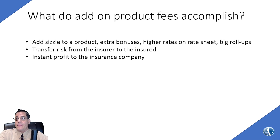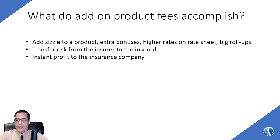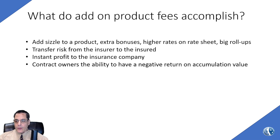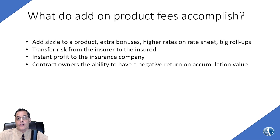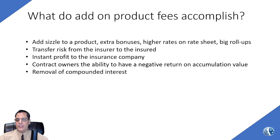I haven't seen where they're taking these fees and making sure that the guarantees are stronger on these products — like down the road, if life expectancy increases, they'll be able to support the long-term guarantees these fees are supposedly taking care of. That's another reason it looks like instant profit for the insurance company. We don't really trust insurance companies when profit is involved over people. Contract owners now have the ability to have a negative return on accumulation value — zeros is no longer the hero. You now have a negative 1% that's almost an enemy to your growth. You went from a hero to a villain in one product feature: the removal of compounding interest.